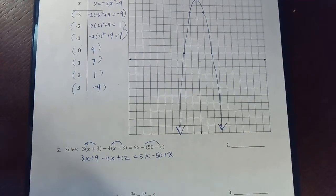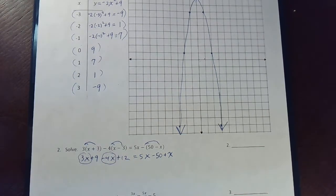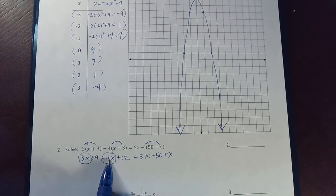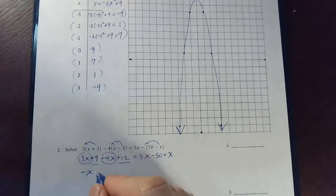All right, well, let's simplify each side individually. Let's see, that would be a 3x and minus 4x would be a negative x. And then the two numbers add up to 12 and 9 or 21.